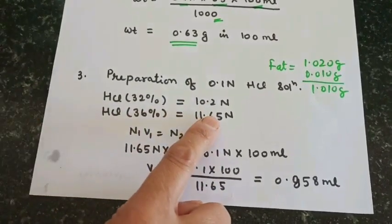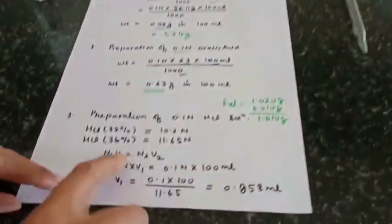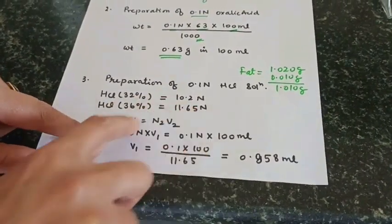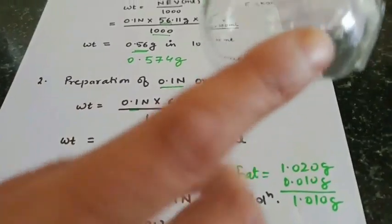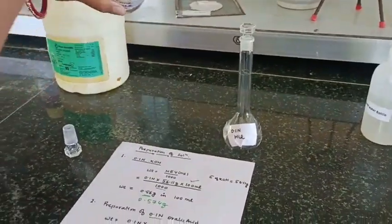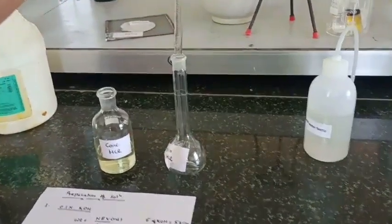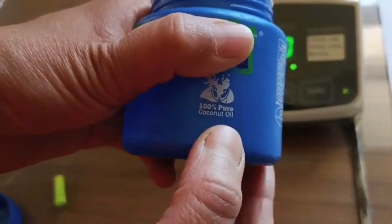Now preparing 0.1 normal HCl solution. Hydrochloric acid is in liquid form and is 35 to 37 percent concentrated. Using the normality equation N1V1 = N2V2, we calculate the volume needed. I want to prepare 100 ml of 0.1 normal HCl. The normality of the 36% concentrated HCl is 11.65. Using this pipette, I transfer 0.8 ml of concentrated HCl into the measuring glass and make it up to the mark with distilled water.